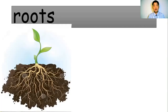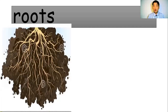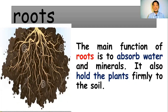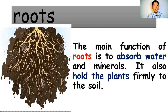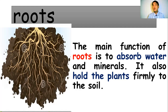Roots have one of the most important roles in the parts of the plant. The main function of the roots is to absorb water and minerals. They also hold the plant firmly to the soil. Without roots, the plant would not be able to stand strong. The main function of the roots is to absorb water and minerals and hold the plant firmly to the soil.